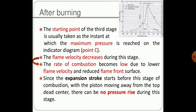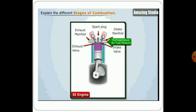The after-burning stage begins at the instant the maximum pressure is reached on the indicator diagram. The flame velocity decreases during this stage and the rate of combustion becomes low, which reduces the flame front surface area. Since the expansion stroke starts before this stage completes — with the piston moving away from TDC — there can be no pressure rise during this stage.